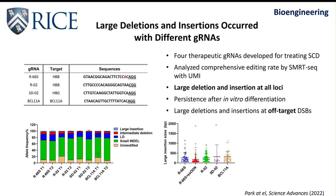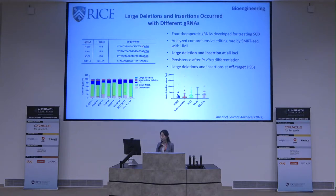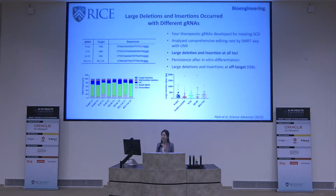On the left is a list of four therapeutic guide RNAs developed for sickle cell disease gene editing. We analyzed comprehensive editing by SMRT sequencing with UMI, and for all guide RNAs at three different loci, large deletions and insertions occur at high frequency. These large modifications persist after two weeks of in vitro erythroid differentiation, and we also showed that large deletions and insertions occur at off-target-mediated double-strand break sites as well.